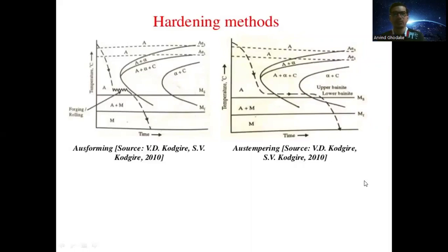We are discussing hardening methods, specifically ausforming and austempering. In this diagram, you can see the time-temperature transformation (TTT) diagram for steel, which represents the transformation phases of austenite. 'A' represents austenite. The diagram shows austenite to pearlite transformation, austenite to bainite transformation, and austenite to martensite transformation.